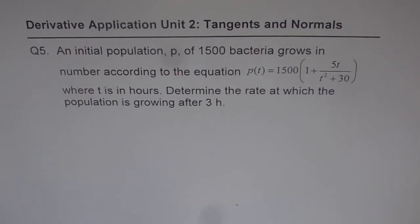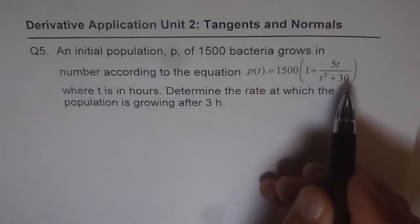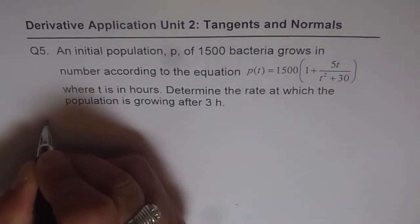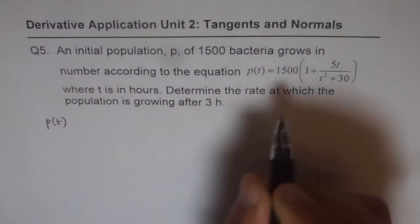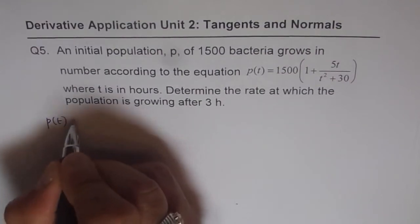Determine the rate at which population is growing after 3 hours. So that means we need to find P dash t for this particular function. Let's rewrite our function now. So what I will do is I will just expand this out. It becomes simpler.